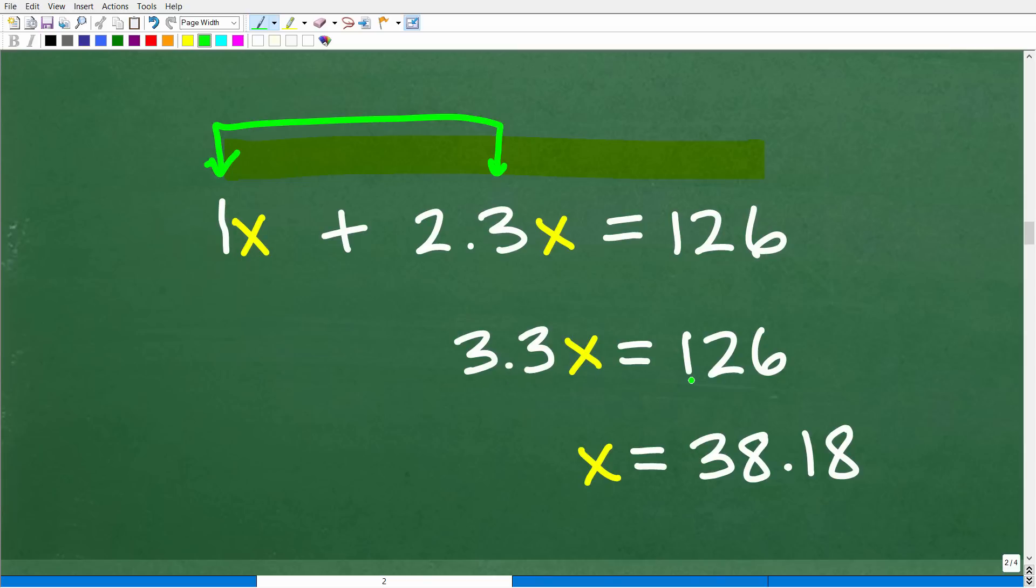So we have 3.3x is equal to 126. So to solve for x, we're going to divide the equation, both sides of the equation, by 3.3. So we're going to take 126 divided by 3.3, and we're going to get approximately 38.18. Now, of course, I'm rounding off a bit, but that'll be close enough. So that's what x is equal to.